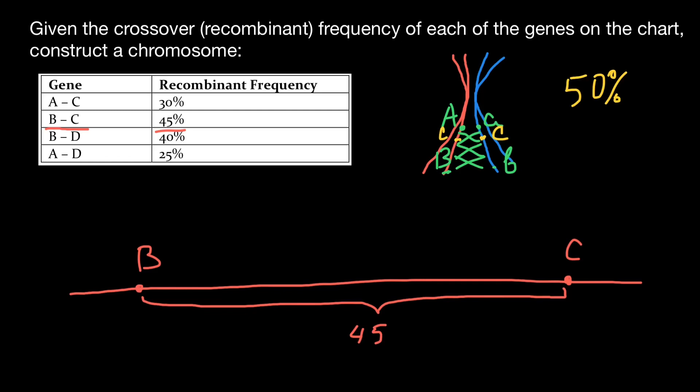Now let's, with second step, find another pair of genes with second place of the crossing over frequency. And this is genes B and D. Can we put D here? No. Take a look. We have 45 here. If we will put 40, we are going to get 85. This is not possible because 50% crossing over is maximum frequency.